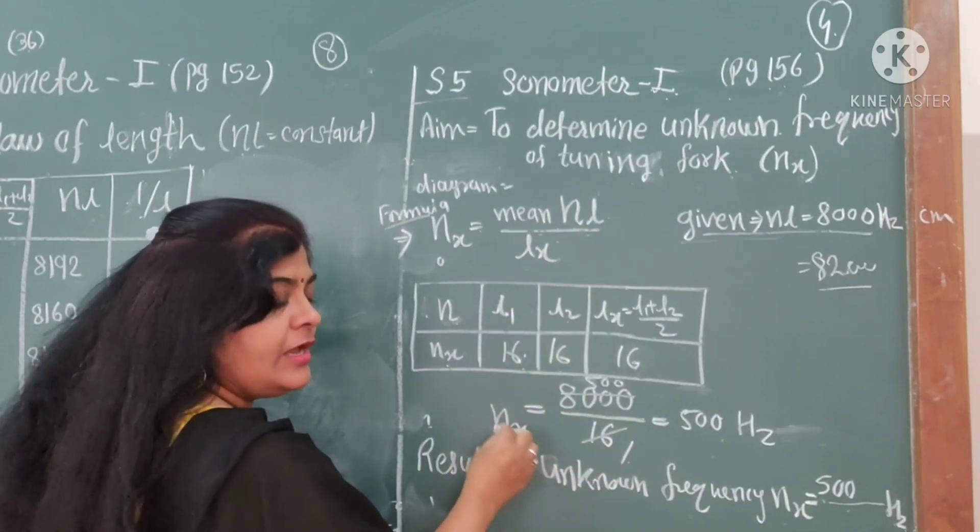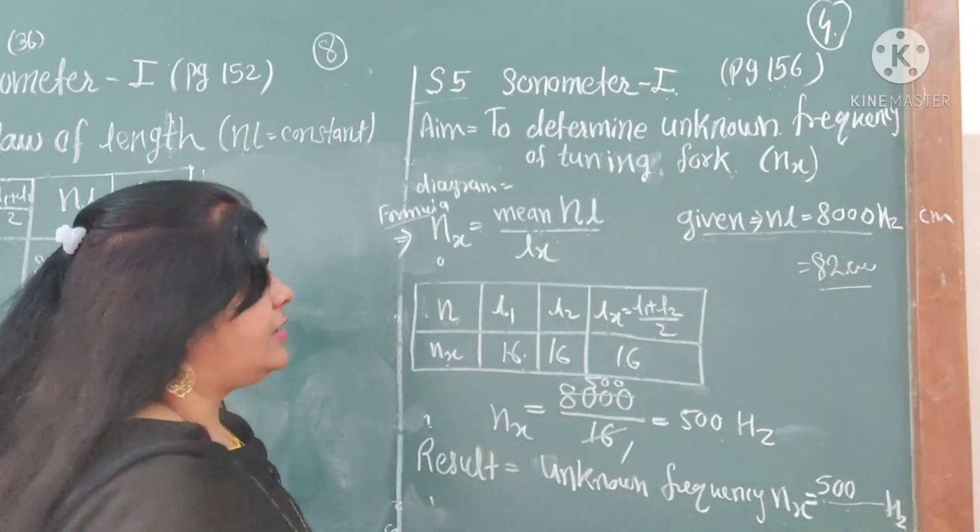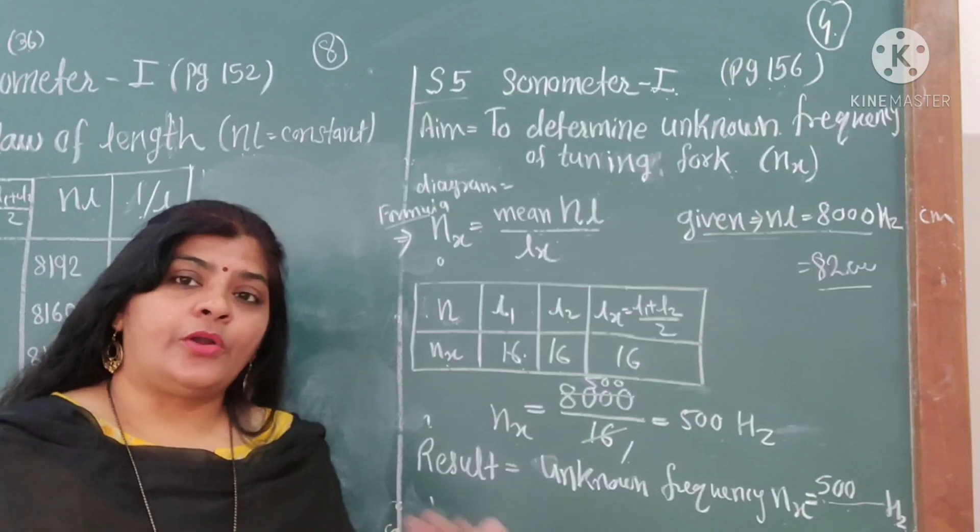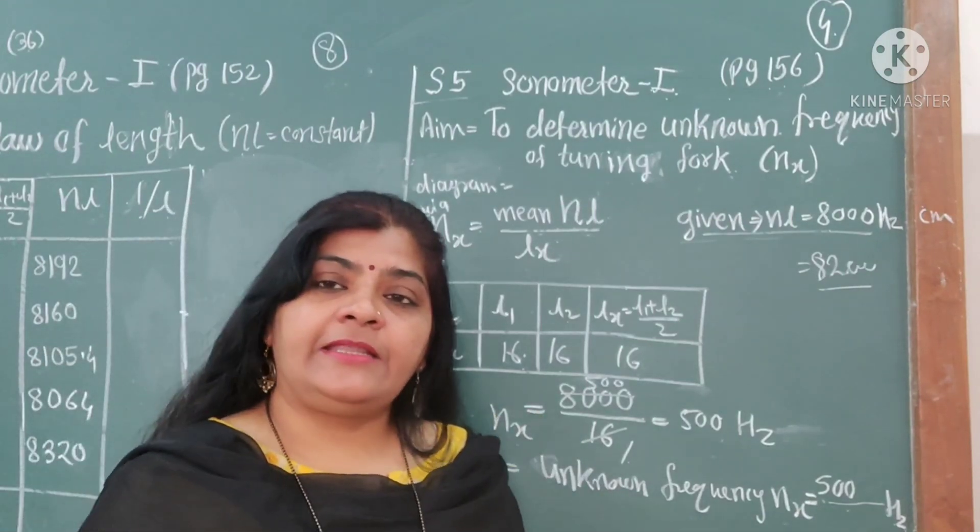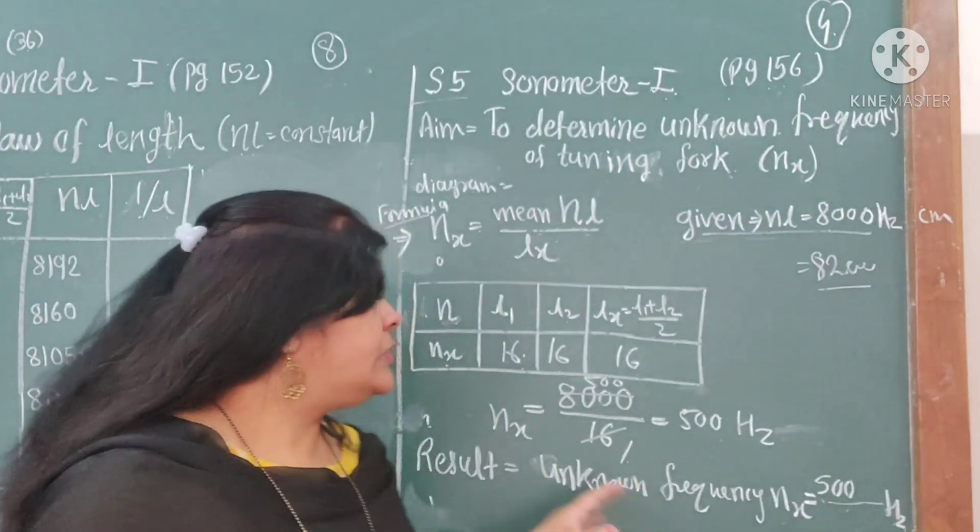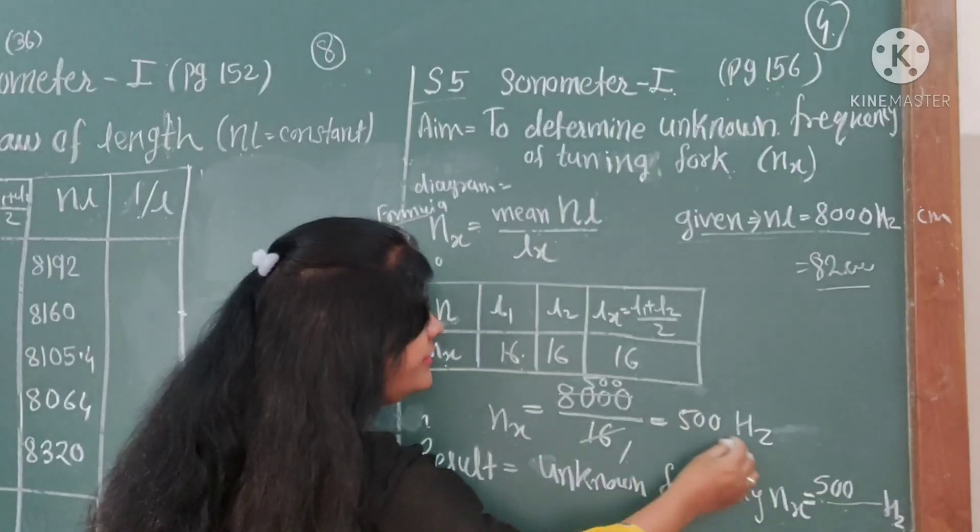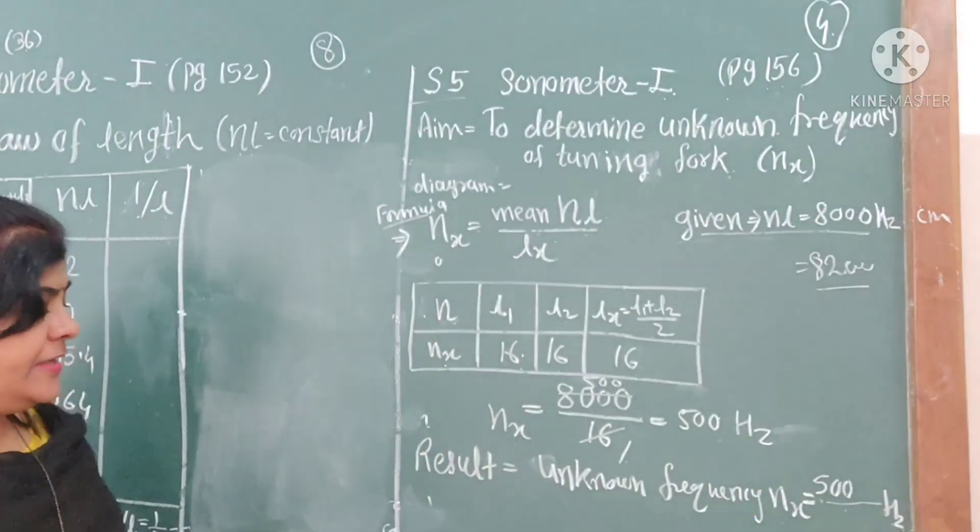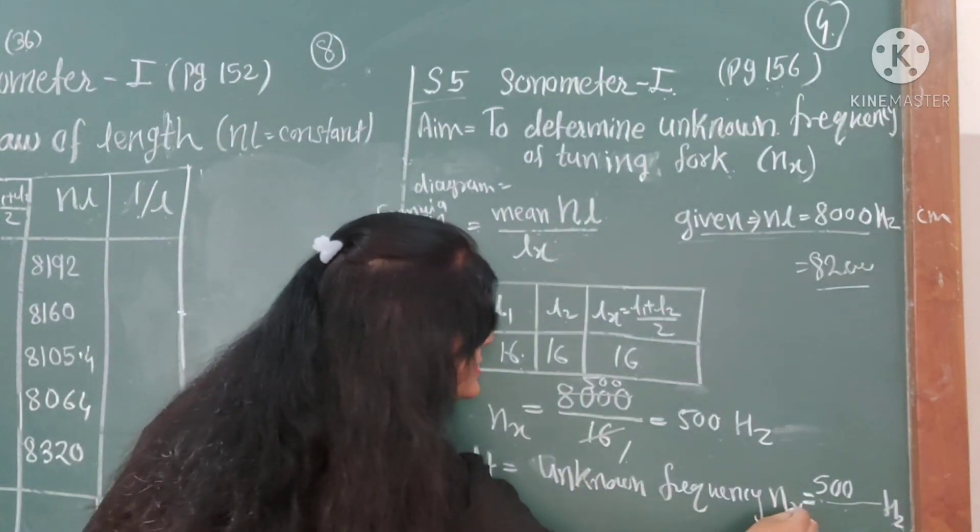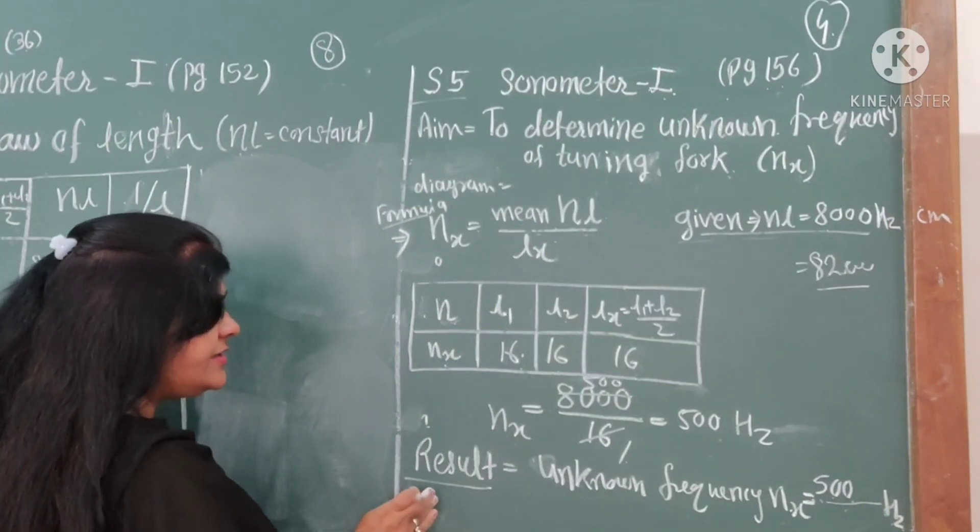Then substitute in the formula. NX equals 8000 divided by 16. You know that 8000 divided by 16 is 500. That will become 500 hertz. This represents the value of the unknown frequency: NX equals 500 hertz. Write this in the result.